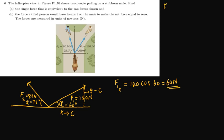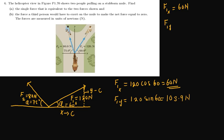So F1x is 60 Newtons and F1y, rounding off, is 104 Newtons. Now on the other side, we can compute F2 into components. Note that F2y is going to be positive because it moves upward, and F2x is going to be negative because it moves in the negative direction.